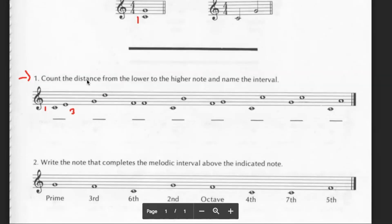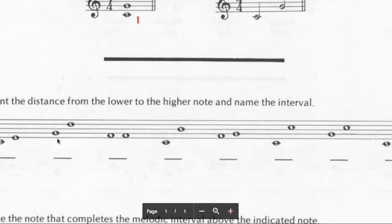And you can see right here that note one is your dough. And then the second note is on the first line, which is your third. So this would be a third. So they want us to count the distance from the lower to the higher note and name the interval. So in this case, we would put a third. All right, let's do one more. And this was a third.